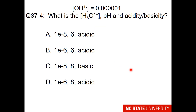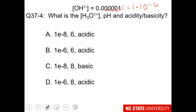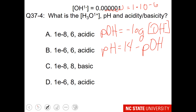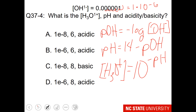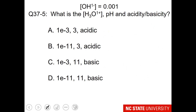Here is your question: given the hydroxide concentration of 0.000001 M (1 times 10 to the minus 6), find the hydronium concentration, the pH, and whether the solution is acidic or basic. Use the pOH from that value to get the pH, and then the hydronium concentration equals 10 to the minus pH. For another question with hydroxide equal to 1 times 10 to the minus 3, use the same process to determine the hydronium concentration, the pH, and whether the solution is acidic or basic.